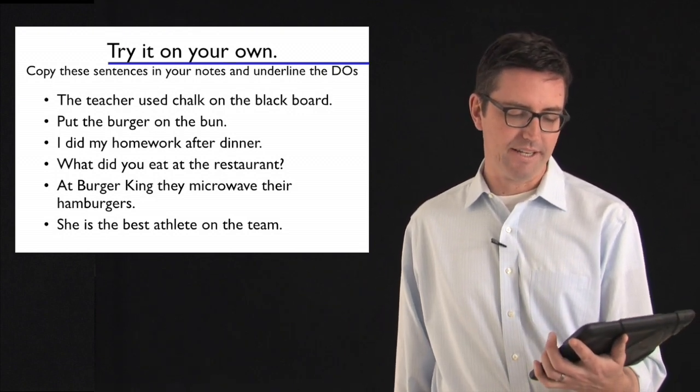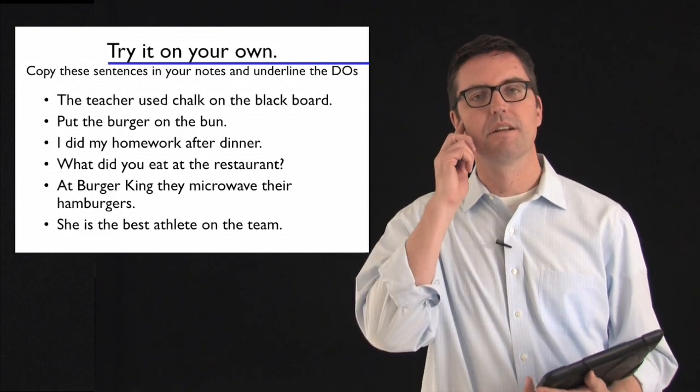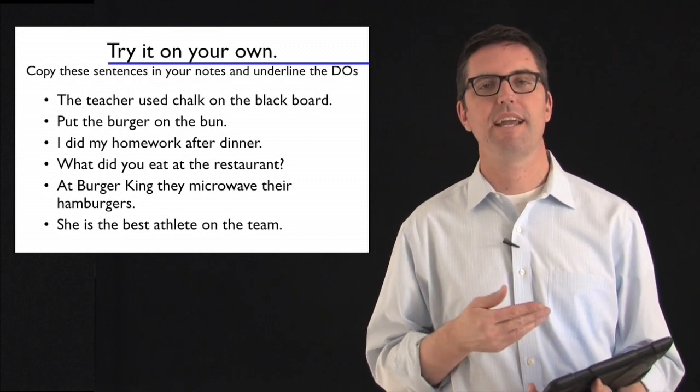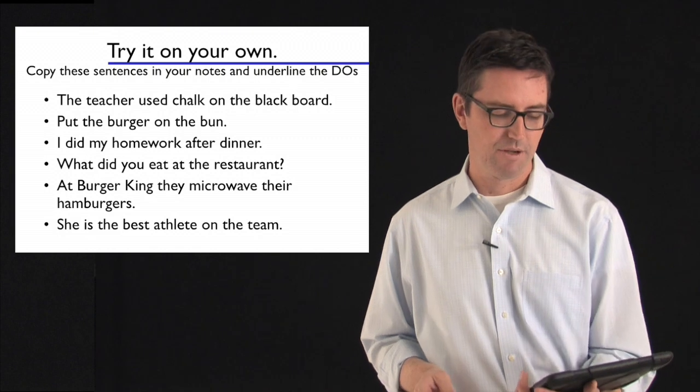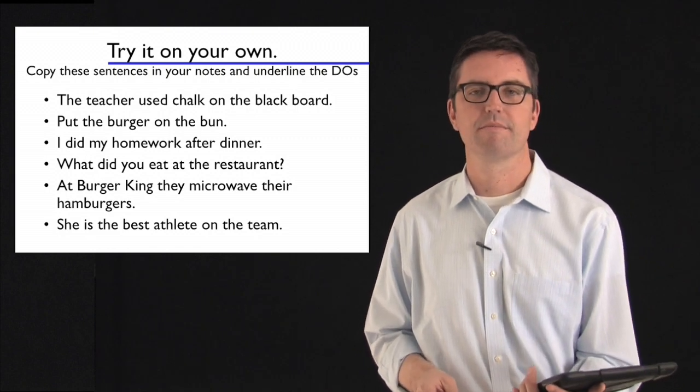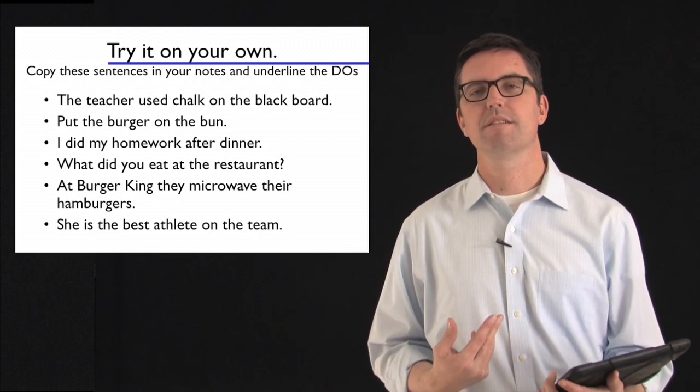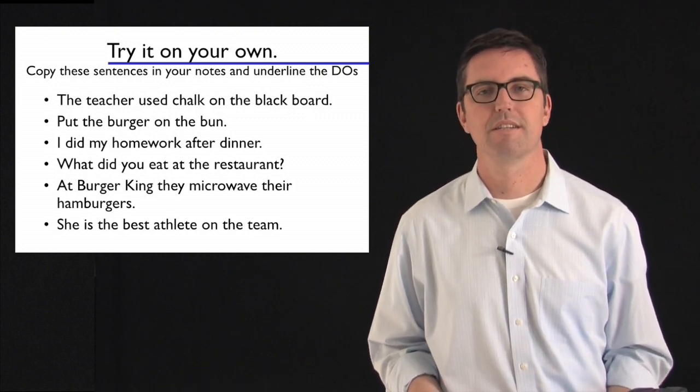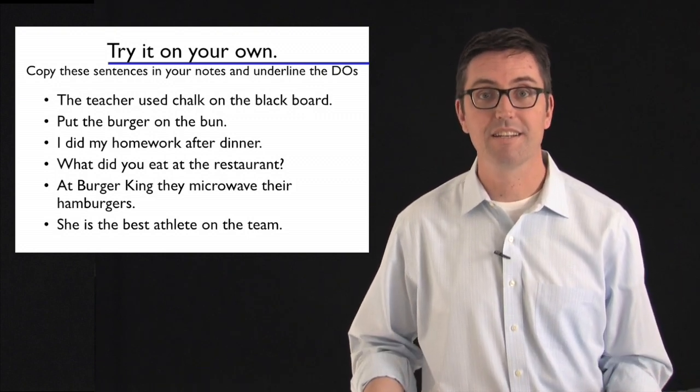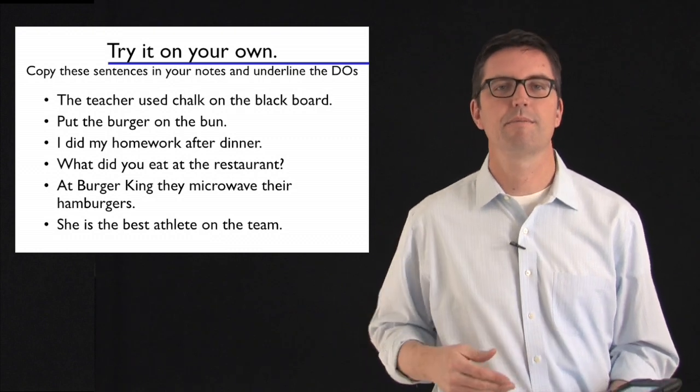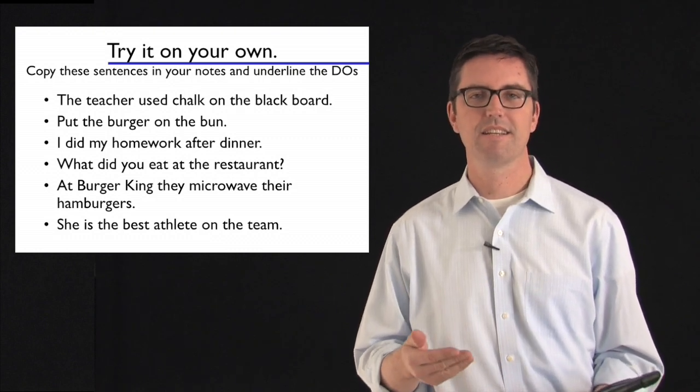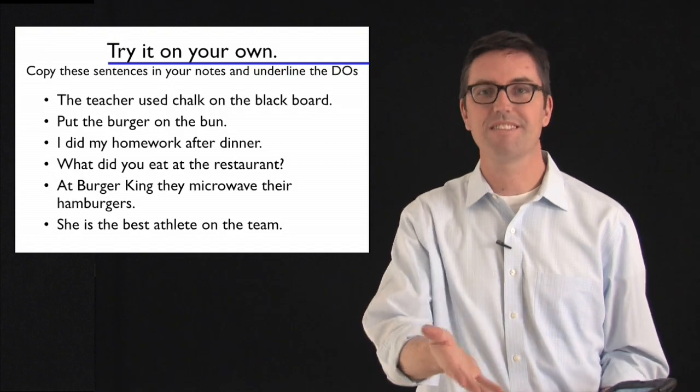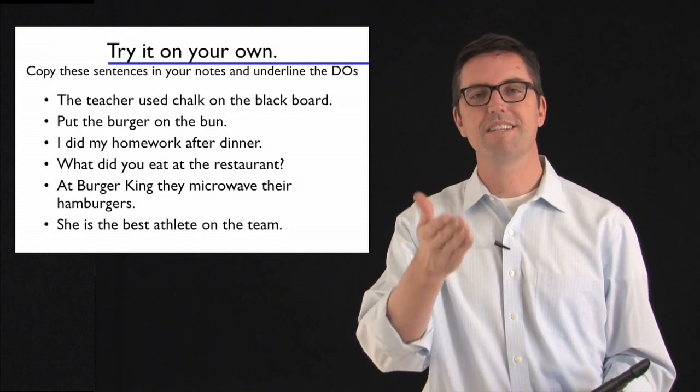What did you eat at the restaurant? So simplify things first. At the restaurant. Cross that out. We're left with what did you eat? Here's another way to handle questions. Rephrase the question as a statement. You ate what? Okay. You is the subject. Eat's the verb. What gets eaten? What. What is the direct object. What is the thing that gets eaten?